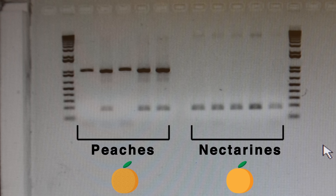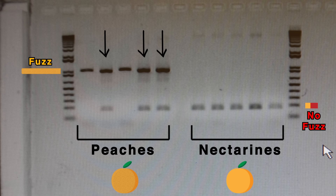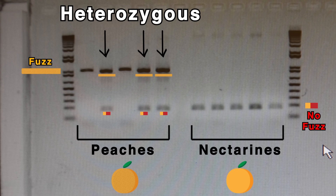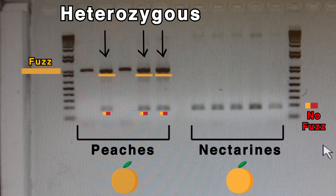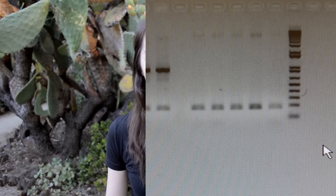And it worked! Nothing in lab ever works on the first try. You can see the nectarines have all these tiny chunks of DNA that moved really far in the gel, while the peaches have these big chunks. And some of the peaches have both, which means they're heterozygous — they have one each of the fuzz and not-fuzz alleles — while the rest of the peaches and nectarines are homozygous, meaning they have two of the same allele.